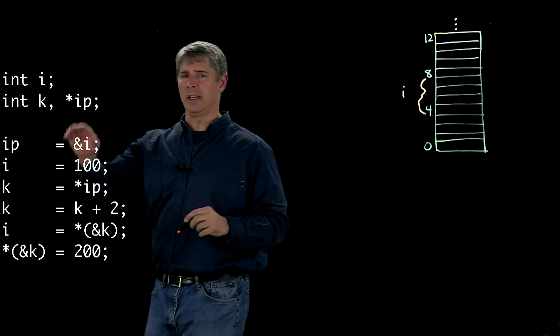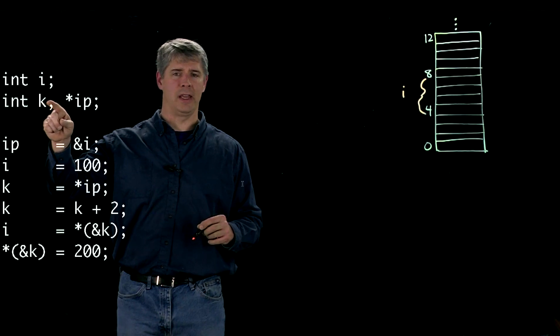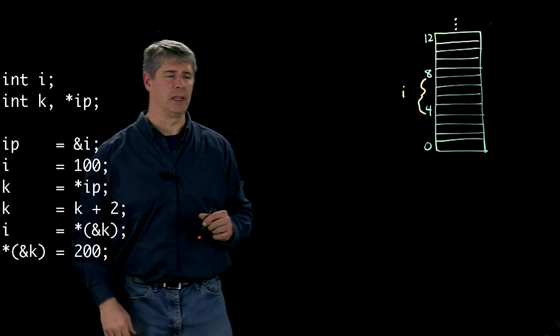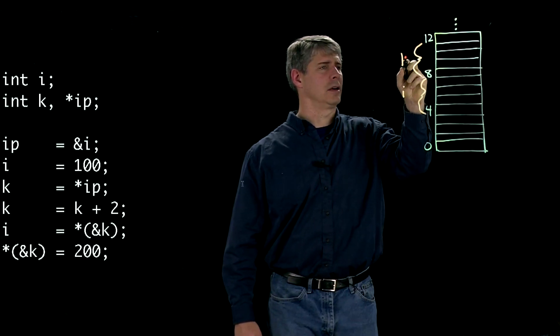The next line here defines what appears to be two more integers, one called k and one called star ip. So let's say that the compiler decides to put k right here.